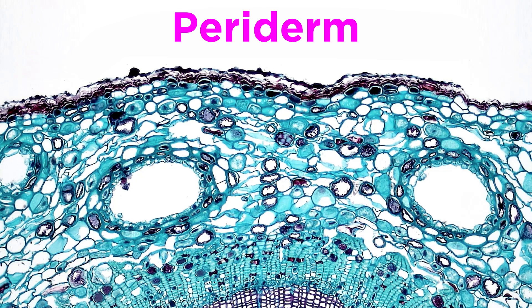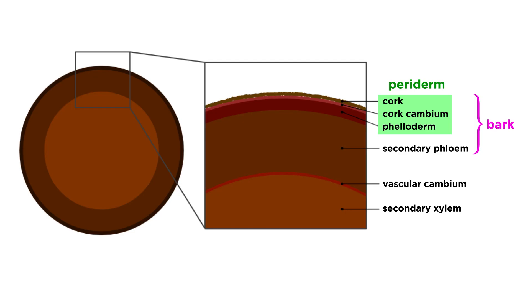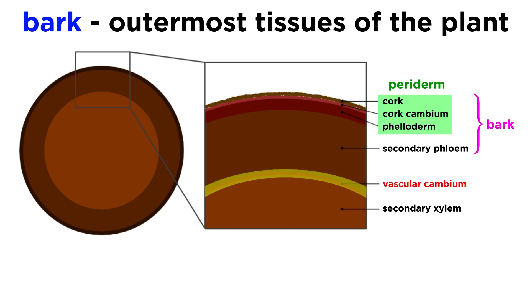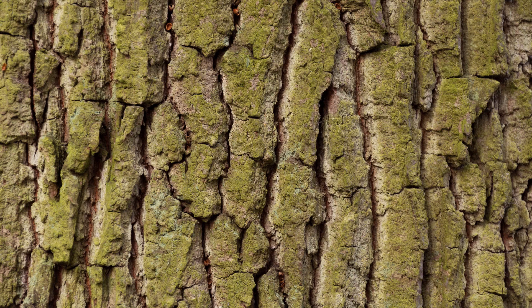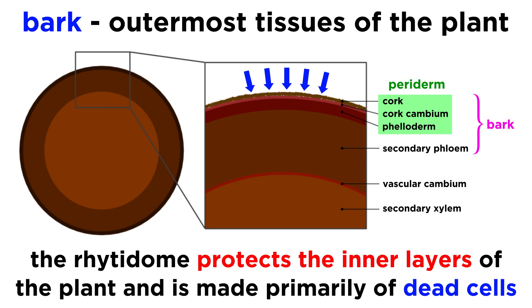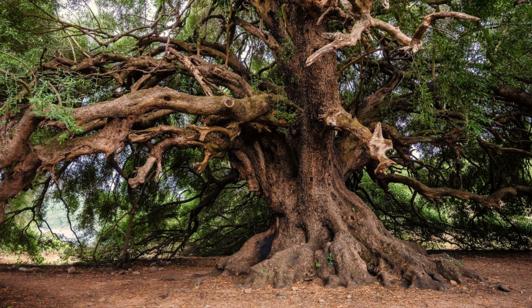In older sections of a plant that aren't growing as fast, the epidermis may transition into a thicker layer of cells called the paraderm, which is the semi-permeable layer of the bark, where bark refers to all the tissues outside the vascular cambium. The paraderm produces and is then protected by the ritodome, which is the outermost layer and most familiar part of bark, since it's the layer covering the trunks of trees. The ritodome protects the inner layers of the plant, and is composed primarily of dead cells. It becomes especially well developed in the older stems and roots of trees.